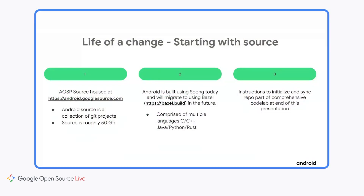Of course, with any change, we begin with the source. The AOSP source is available at android.googlesource.com, and the Android source is a collection of Git projects synced using a custom tool we call Repo. The open source branch is roughly 50 gigabytes big, but mostly we're talking about the main or master branch there. If you consider all the branches that have ever existed in AOSP, it's significantly bigger.